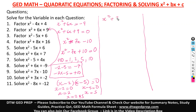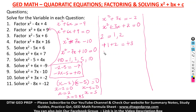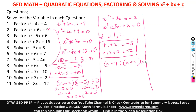Question 10: x squared plus 3x equals negative 2. Take negative 2 to this side — becomes positive 2 — giving x squared plus 3x plus 2 equals 0. Factors of positive 2 are 1 and 2. Positive 1 and positive 2 sum to positive 3, and 1 times 2 gives positive 2 — both rules confirmed. So (x plus 1)(x plus 2) equals 0, giving x equals negative 1 and x equals negative 2.